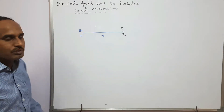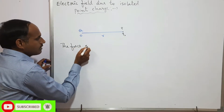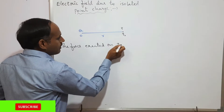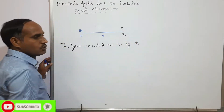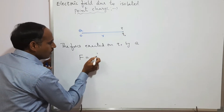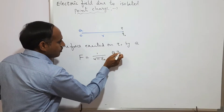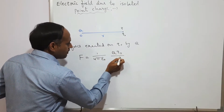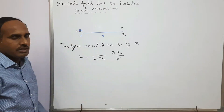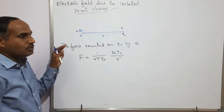According to Coulomb's law, the force exerted on q₀ by q can be written as: F = (1/4πε) × (q × q₀) / r². Here I took q as a positively charged one. Because of this positive charge, the direction of the electric field is away from the positive charge, radially outward.